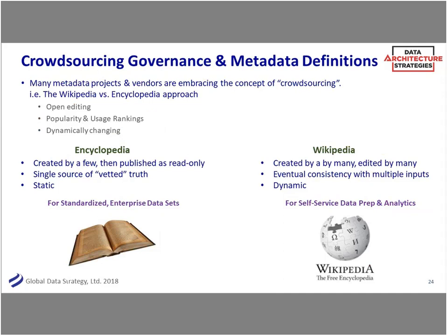But there's another kind of metadata — crowdsourcing. That's the agility side: if I'm doing self-service data prep and analytics, I want to see what other people have done, what analytical model they used, what data set. Someone else already built the model — maybe I'll go talk to Joe who built it. I like to look at it as the encyclopedia versus Wikipedia. Both are good. Wikipedia uses wisdom of the crowd, eventual consistency, it's dynamic. There's still a place for an encyclopedia — longer, more vetted. Just use the right approach for each.